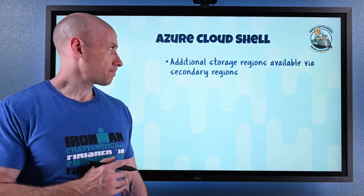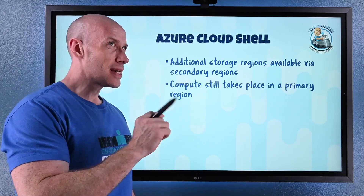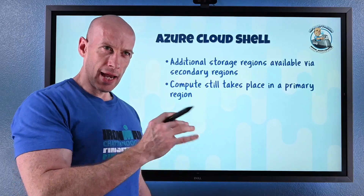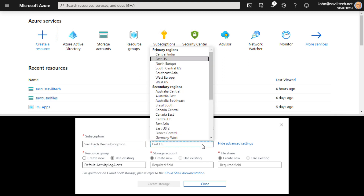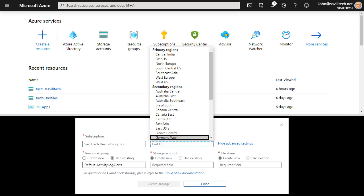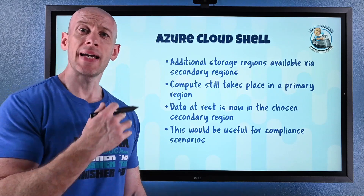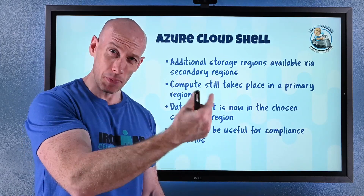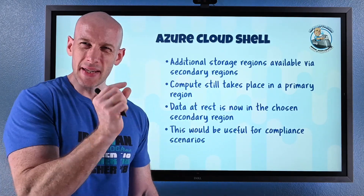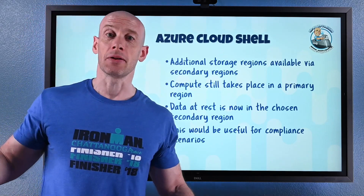In Azure Cloud Shell, there are now additional storage regions available. These will be secondary regions — the compute container that runs Cloud Shell will still be in a primary region, but the data at rest, like profiles or data in an Azure file share, will go to whatever secondary region you choose. If you have compliance requirements about where data is stored, you can now accommodate that. There may be a small performance degradation since the storage is in a different region from the compute, but if it helps meet compliance regulations, it's worth it.